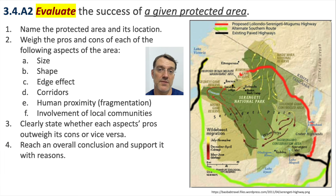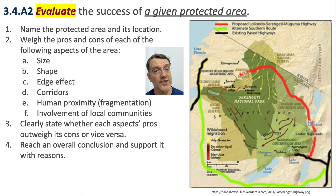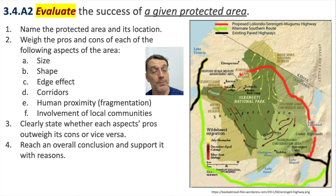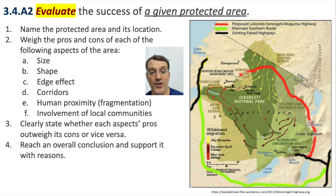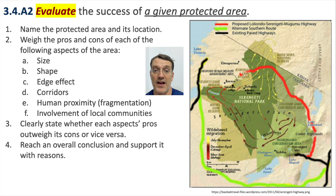As part of your ESS case study in Paper 1, you might be asked to evaluate the success of a named protected area — or it could be part of a Paper 2 structured essay using the nine-mark bands. If asked on Paper 2, you need to consider the size, shape, edge effect, corridors, proximity to human settlements, fragmentation of the habitat, and the benefit to the local community when determining whether that area is or may be successful.